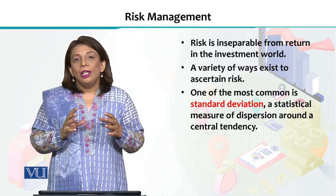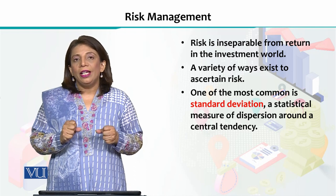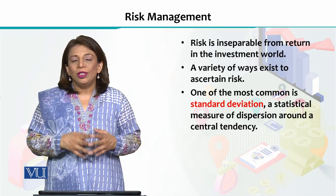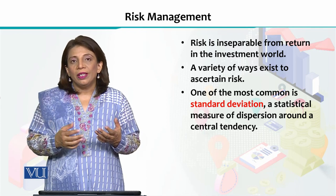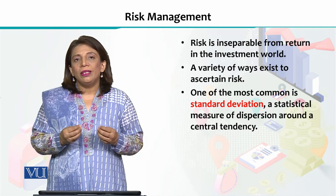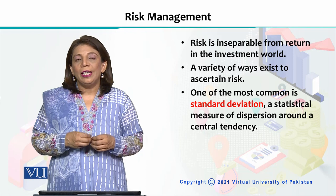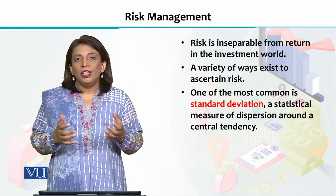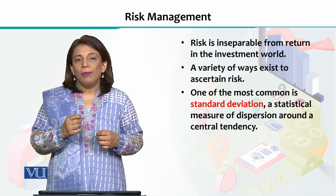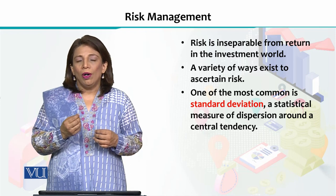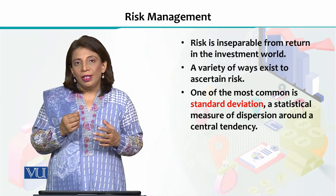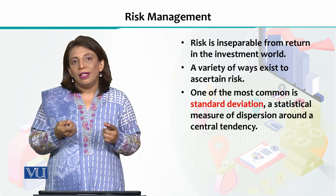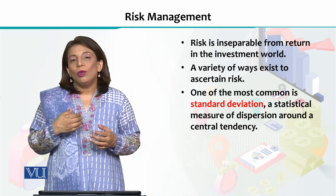The second important thing is standard deviation. Standard deviation is a statistical term which tells you the spread or dispersion of data — it indicates what the average value is and how the rest of the values in the data are distributed around that average. This spread or dispersion is what we use to assess risk.